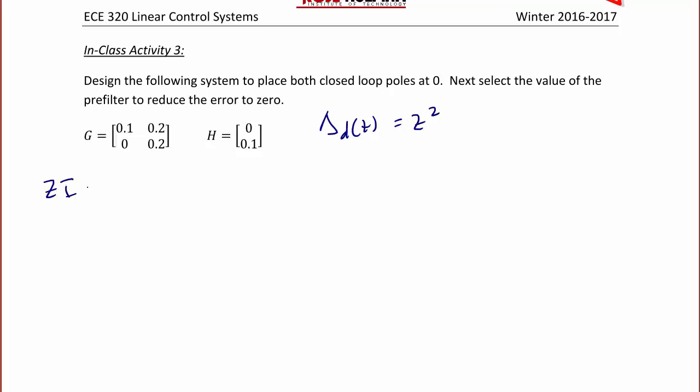Once again, the first thing we're going to do is find ZI minus G plus HK, which is Z, 0, 0, Z minus 0.1, 0.2, 0, 0.2, plus H, 0, 0.1, times K, K1, K2.